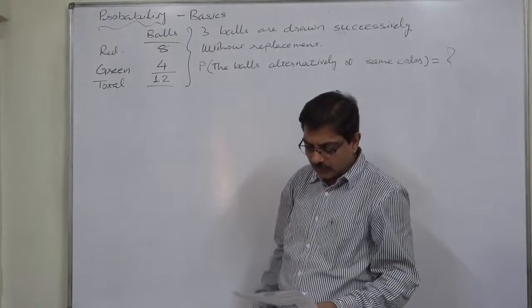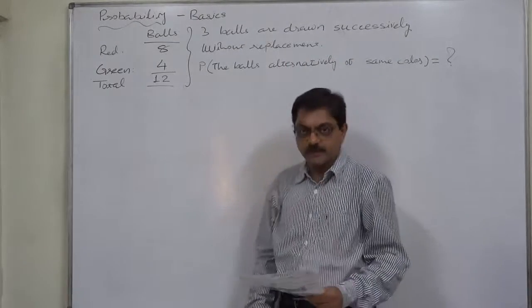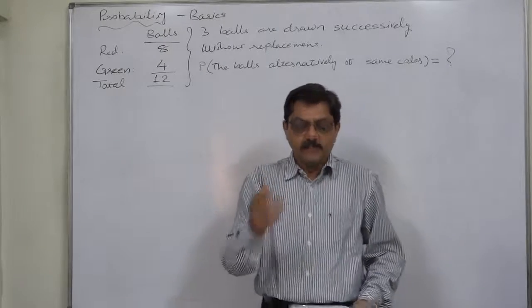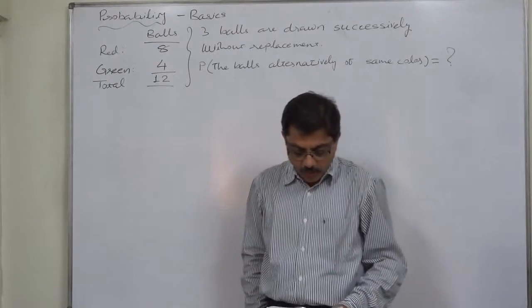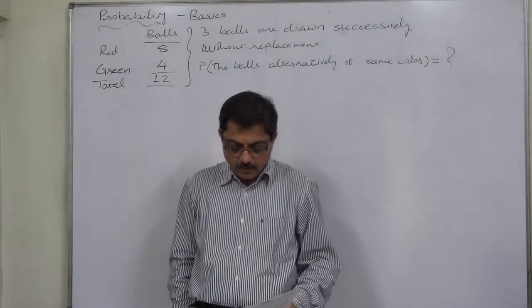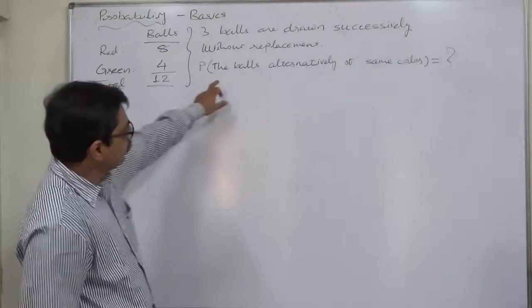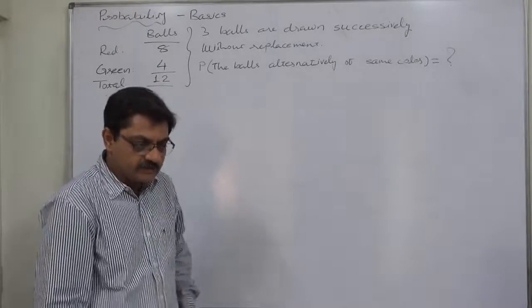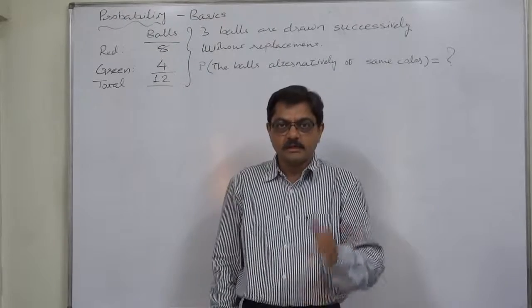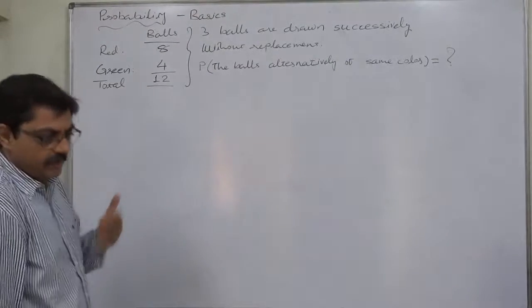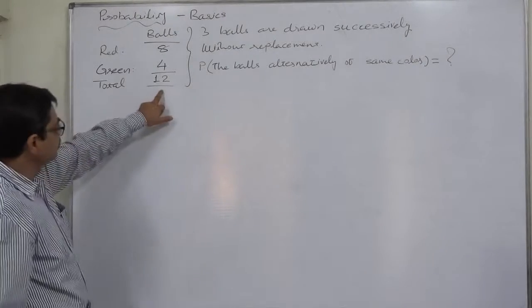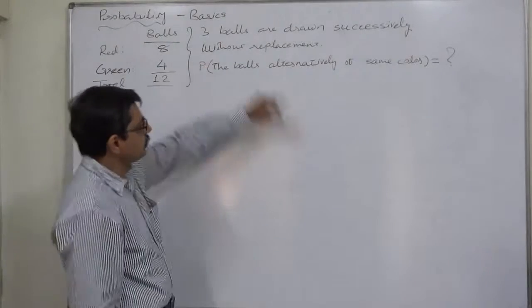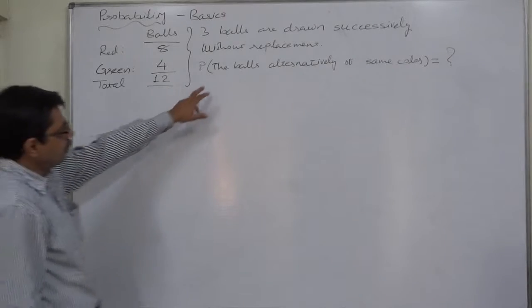Three balls are drawn successively without replacement — that means one ball is drawn at a time and is not replaced. After every draw, the total number of balls reduces by one. So the first draw is made out of 12, the second out of 11, and the third out of 10.